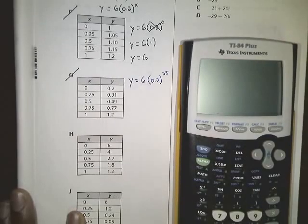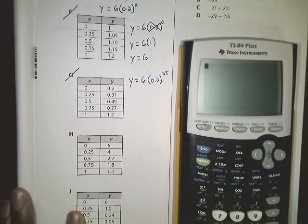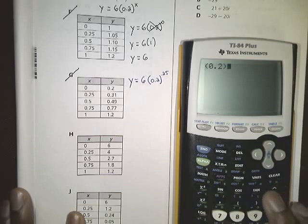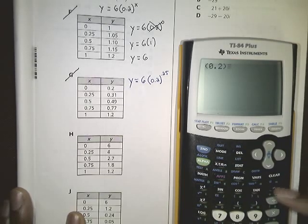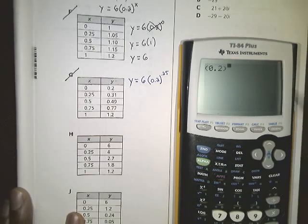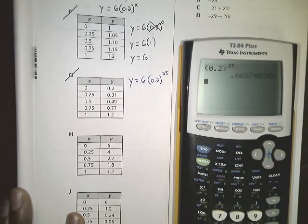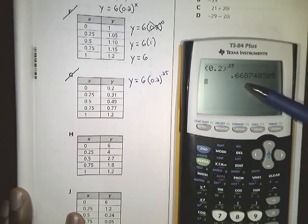So if you turn on your calculator and type in parentheses 0.2, close your parentheses, and then use your caret here or your little hat. Some people say hat, some people say caret. If you press this button, it'll make you have an exponent. And if you type in 0.25 and then enter, it'll give you this value here. It gives you this decimal, 0.668.